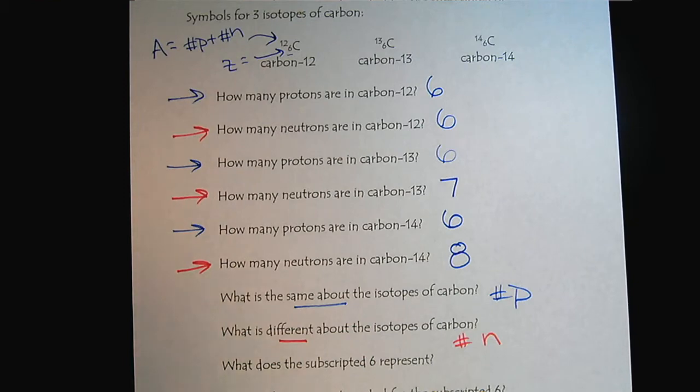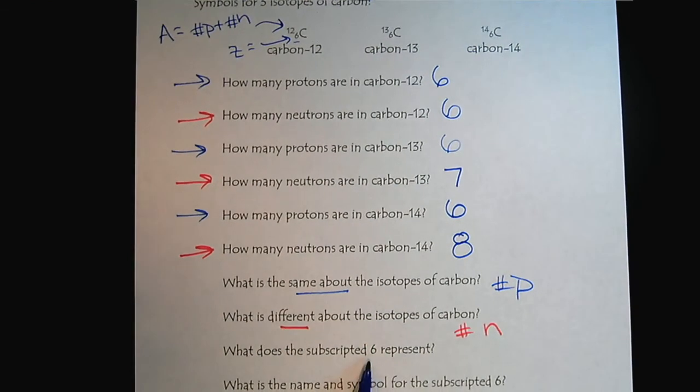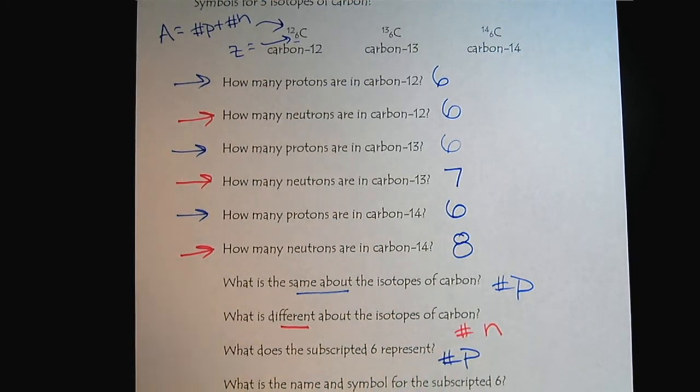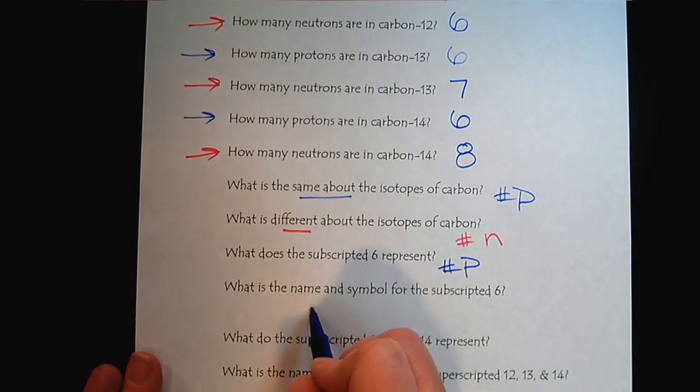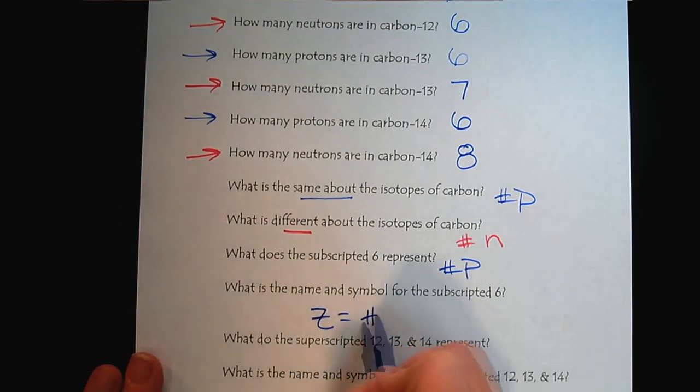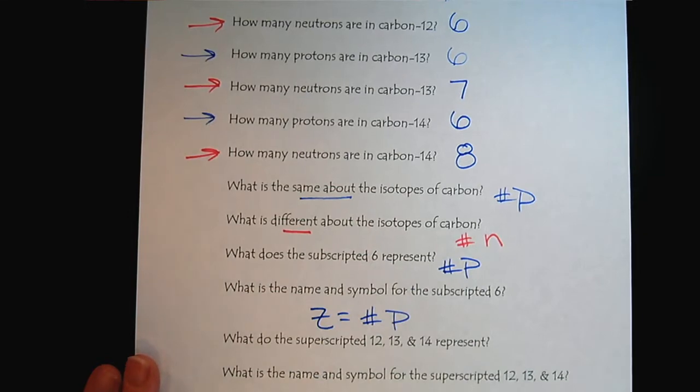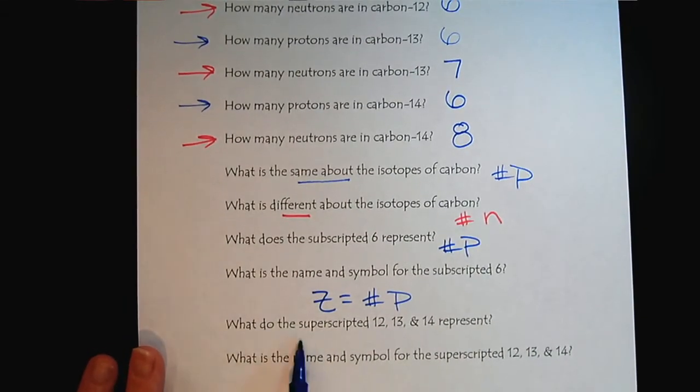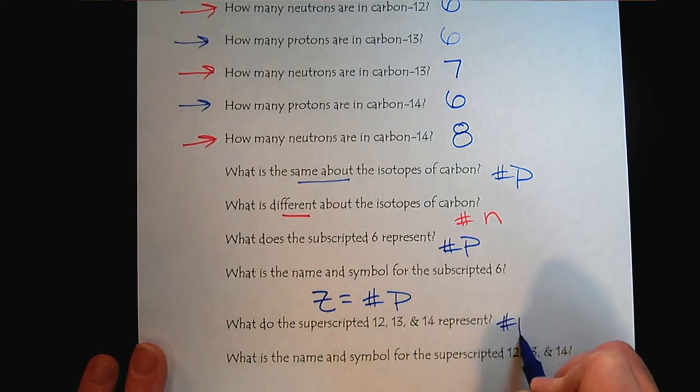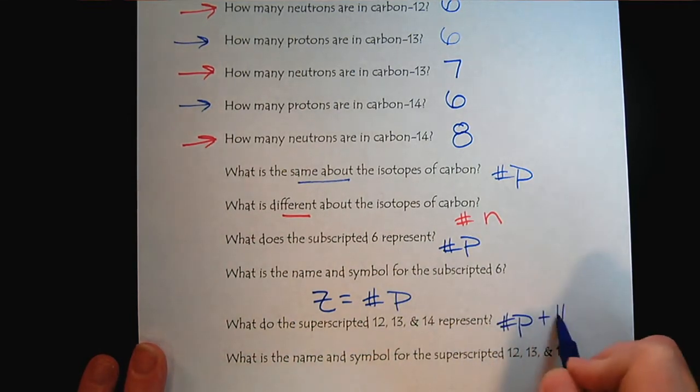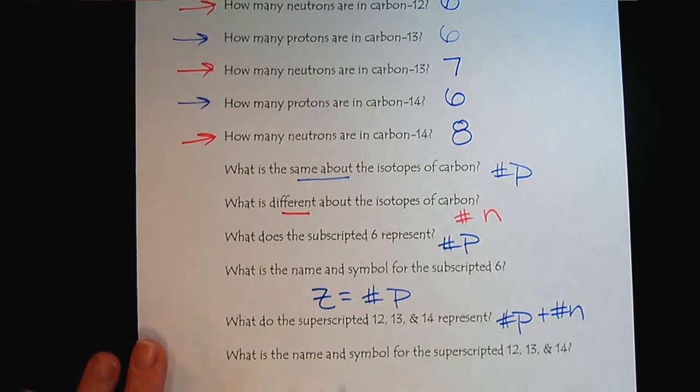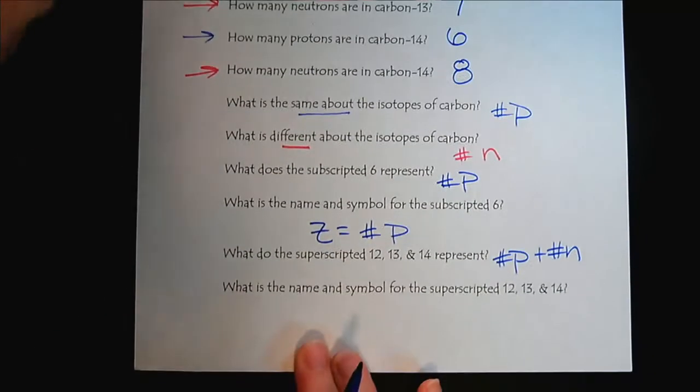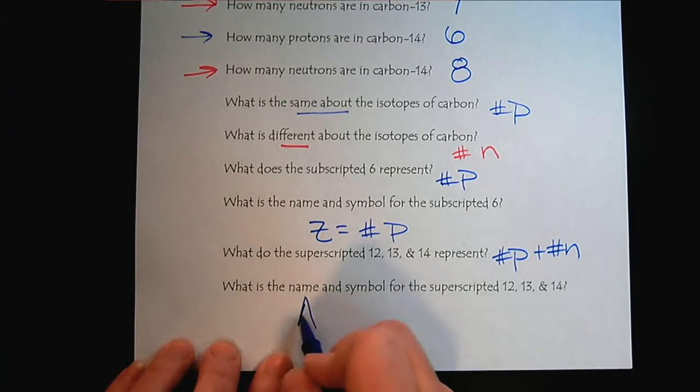So what does the subscripted six represent? That represents the number of protons, and we remember that the symbol there is Z for the number of protons. And then the superscripted 12, 13, 14, that represents the number of protons plus the number of neutrons. And we remember that that symbol is A.